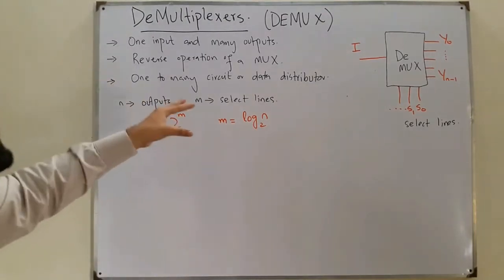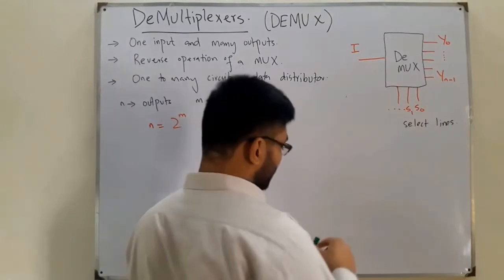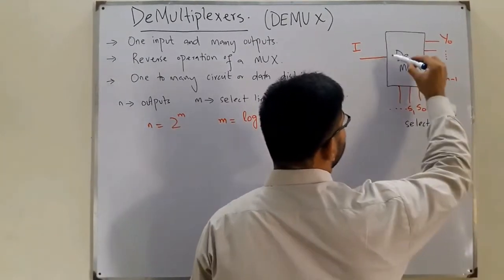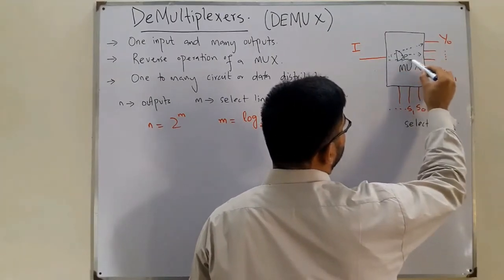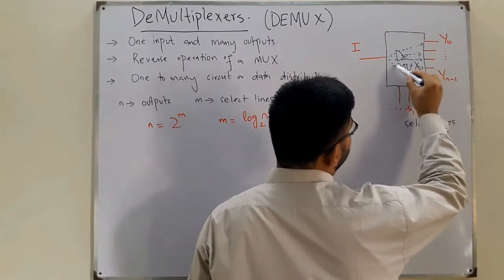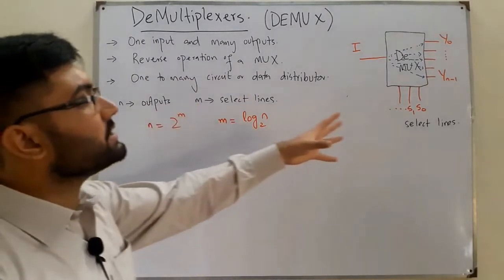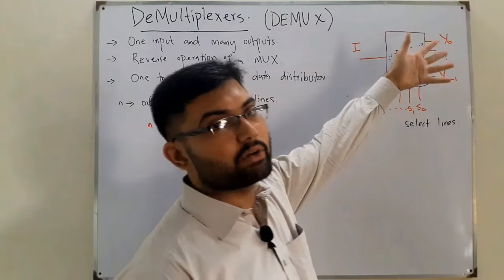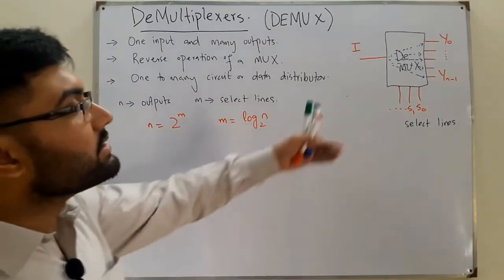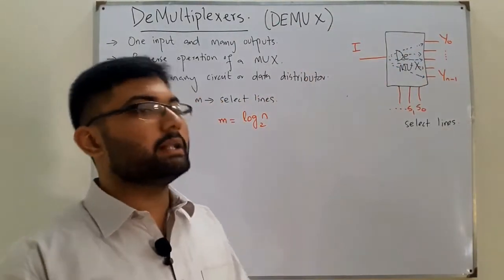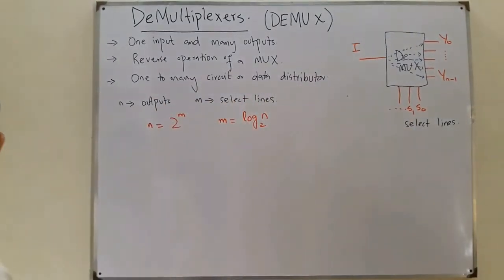It is called a one-to-many circuit or data distributor because one input line can be connected to any of the output channels. It distributes the data from a single line into a number of channels, using the select lines — just as we saw with multiplexers.